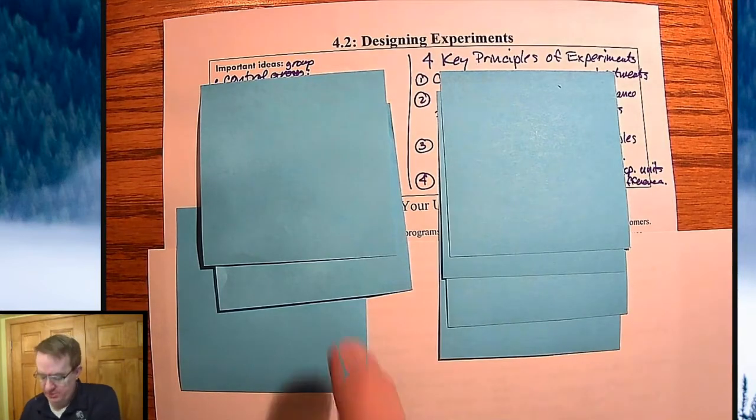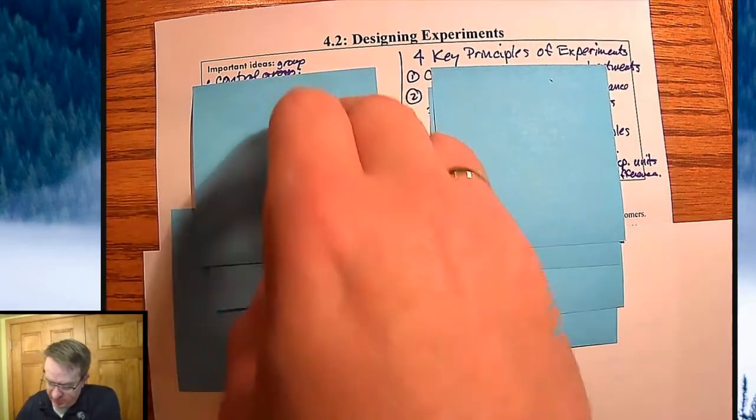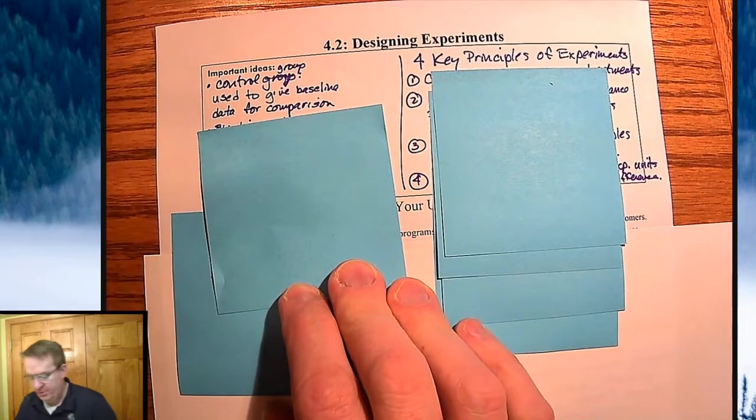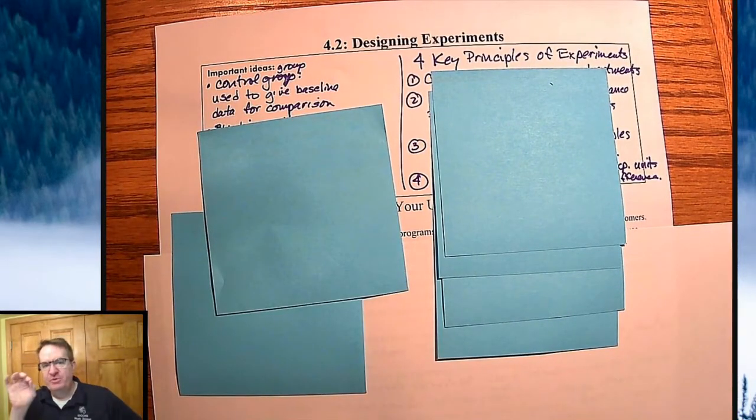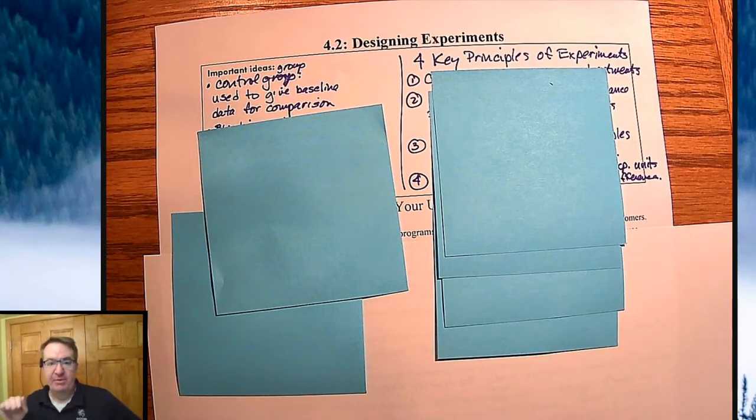First of all, control group. Your control group is used to give a baseline comparison. Control group is what happens or what would you expect if nothing happens. So what is the baseline blood levels, what is the baseline SAT scores, whatever.